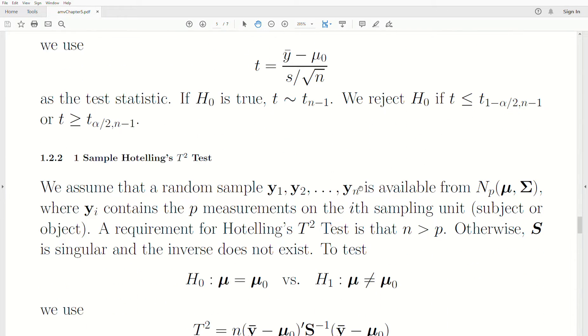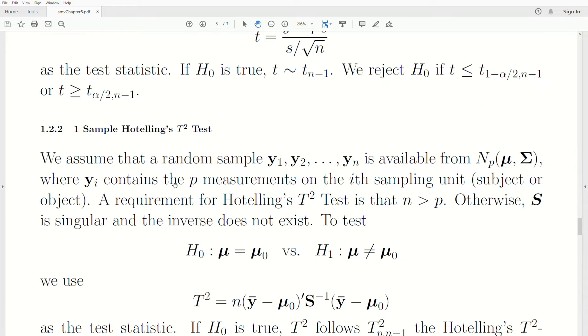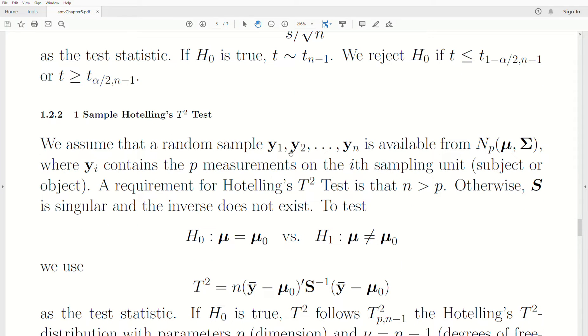The multivariate analog is called the one-sample Hotelling's T² Test. We assume we have a random sample from 1 to n. Remember, y1 is a vector of length p. There's p variables that we're collecting on each unit or subject. It follows a multivariate normal with mean vector mu covariance matrix sigma.